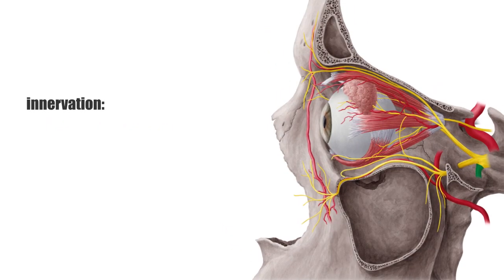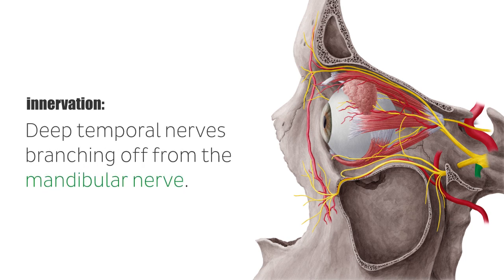The temporalis is innervated by the deep temporal nerves branching off from the mandibular nerve. You can see the mandibular nerve highlighted in green on the image on your screen.